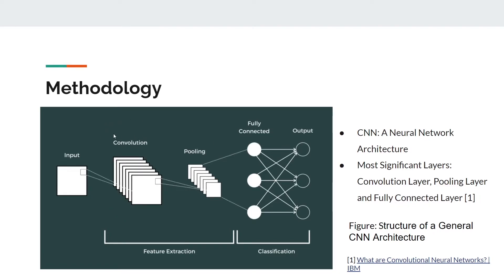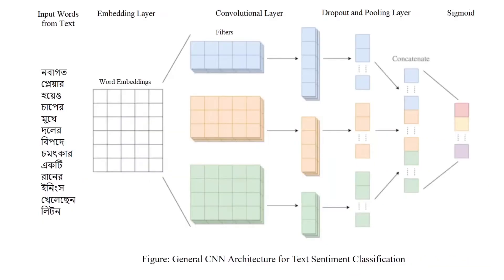The convolutional layer convolves the input data — in this case, the given sentence. The convolutional and pooling parts handle feature extraction, and then the FC layer, or fully connected layer, handles the classification part, which mainly helps classify whether the given sentence is positive, negative, or neutral. This is the general CNN architecture for text sentiment classification.